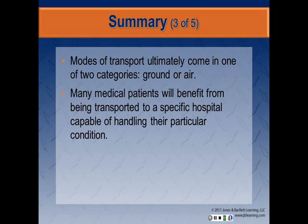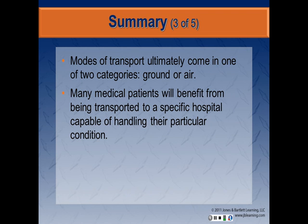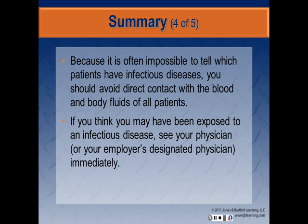If the patient is not in critical condition, gather as much information as possible from the scene so that you can transmit that information to the physician at the emergency department. Many medical emergency patients do not have immediate life-threatening conditions. If a life-threatening condition exists, transportation should include lights and sirens; if not, careful consideration should be given to non-emergency transport. Modes of transport come in two forms — ground or air. Many medical patients will benefit from being transported to a specific hospital capable of handling their particular condition. Because it is often impossible to tell which patients have infectious diseases, avoid direct contact with blood and body fluids of all patients. If you think you may have been exposed to an infectious disease, see your physician or employer's designated physician immediately.